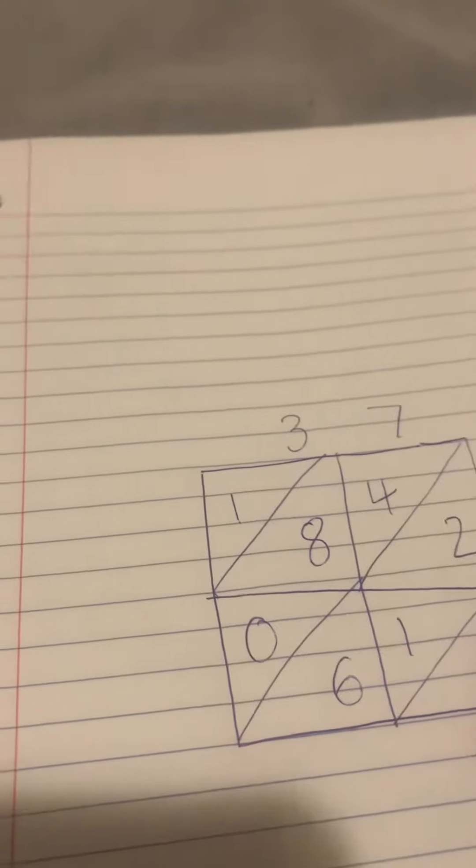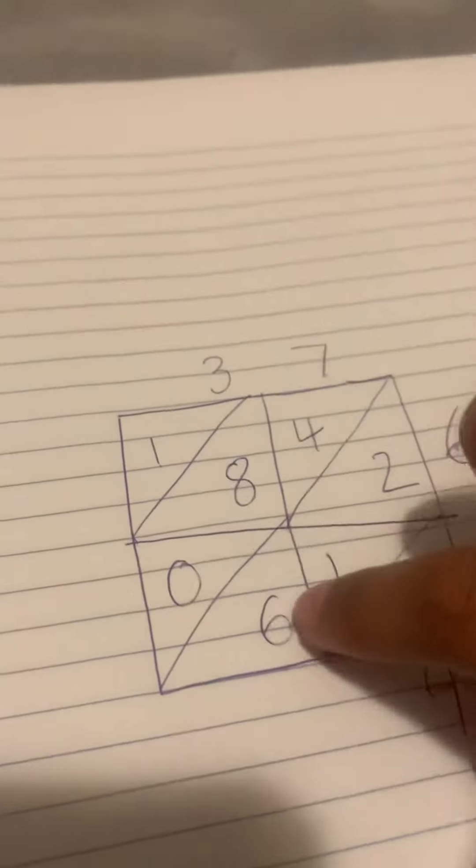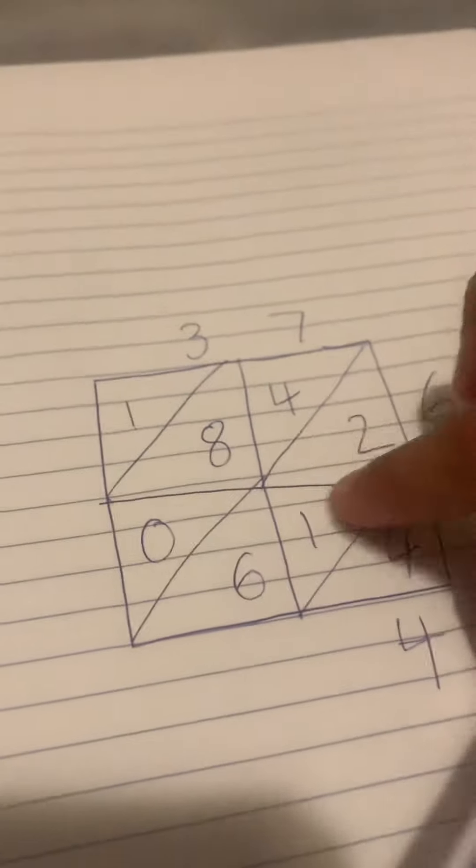Now you have to add it. So in this column there's 4, so put 4 there. And this column right here to add, so 6 plus 1 is 7, and then plus 2 is 9, so you put 9 here.